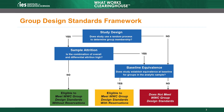Attrition is a key element of the WWC's Group Design Standards Framework. This framework was introduced in the Group Design Module, which is Module 1. As illustrated in the framework, once a review determines that a study used a random process to assign units to groups, the WWC then considers the level of sample attrition that occurred in the study.